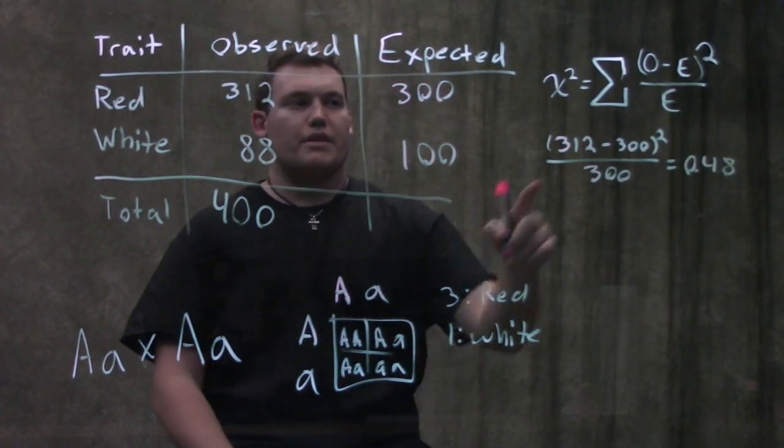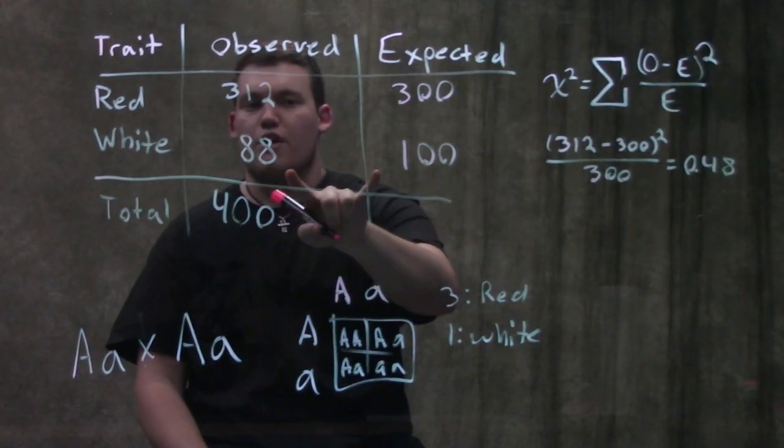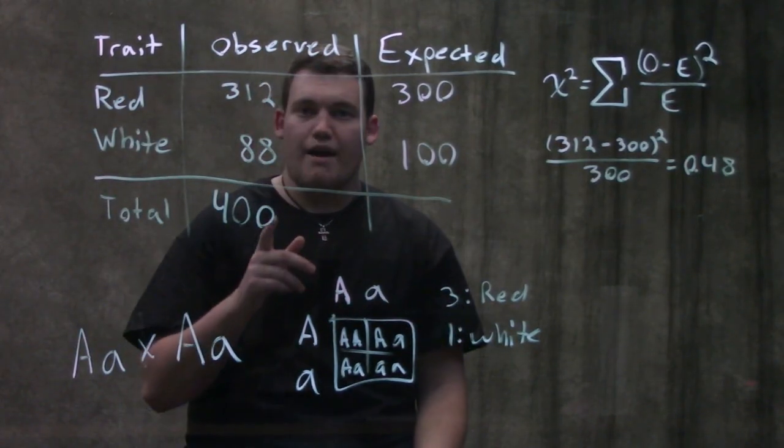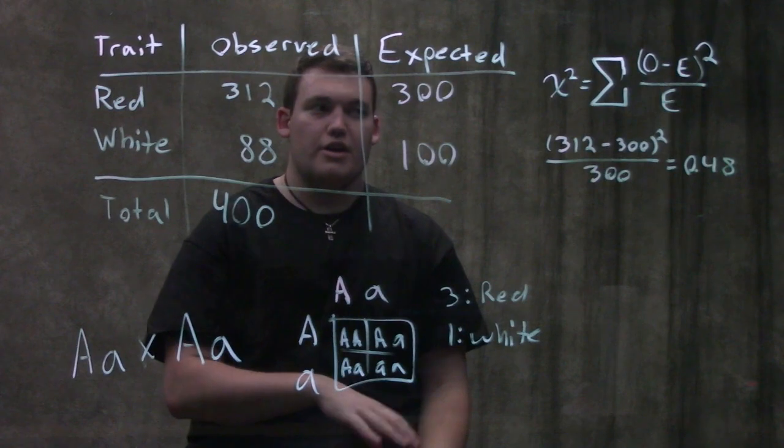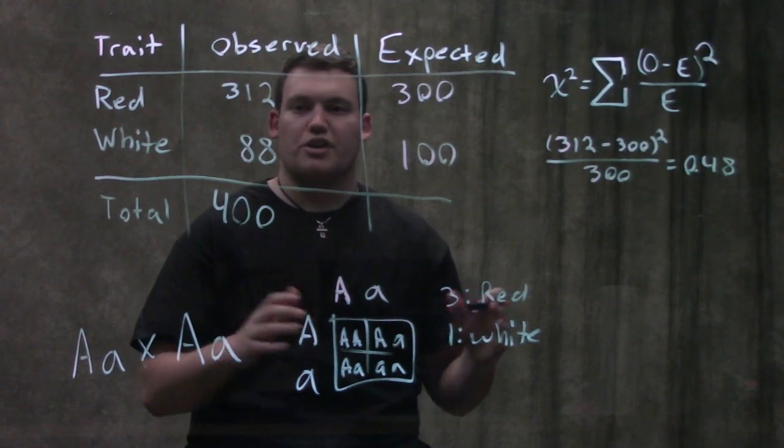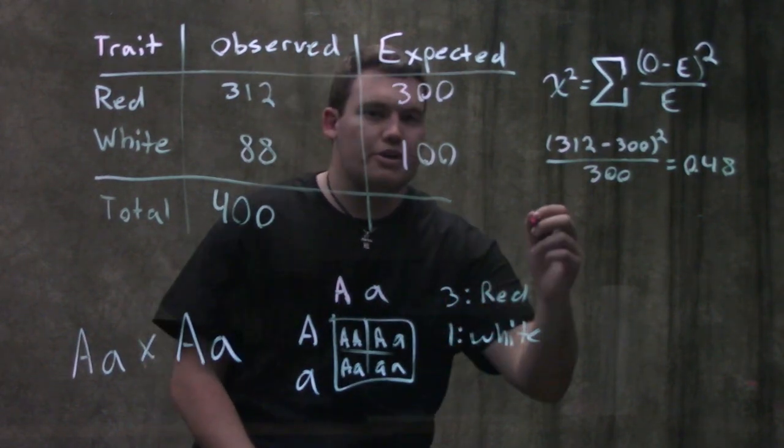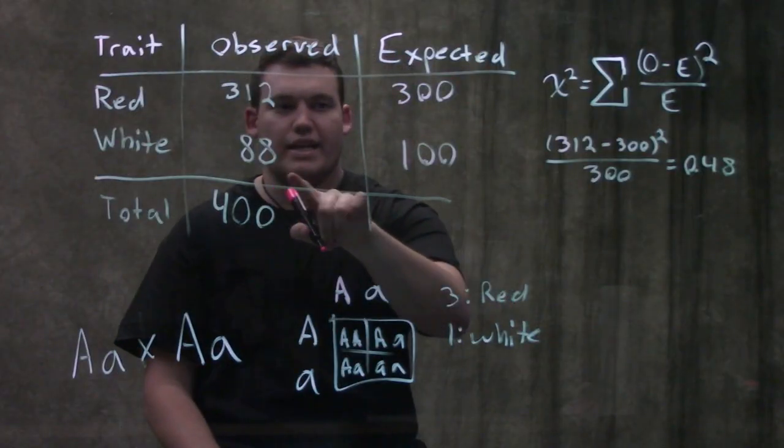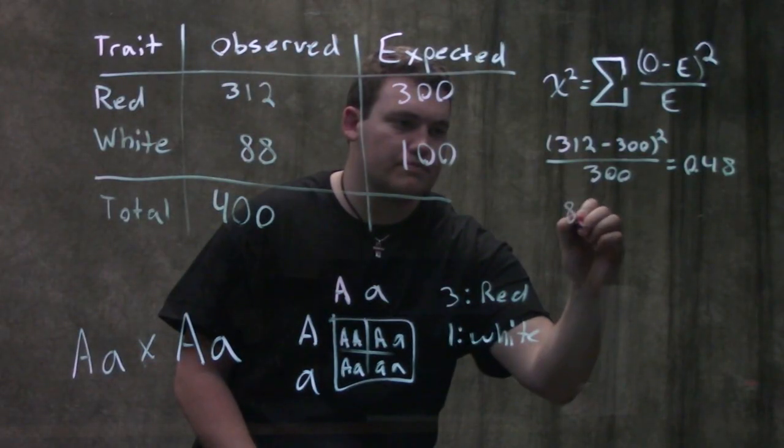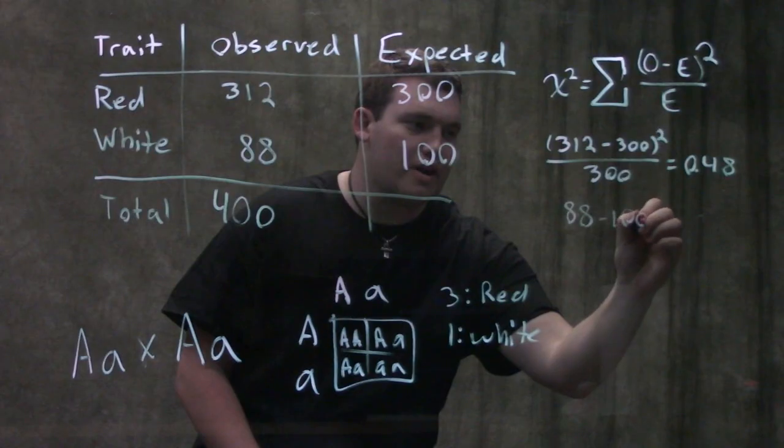But we're not done yet because this says the sum of all of them. So we have to do this for our other trait. Notice here if you have a third or fourth or fifth trait you have to do this for each individual trait and add them all up at the end.